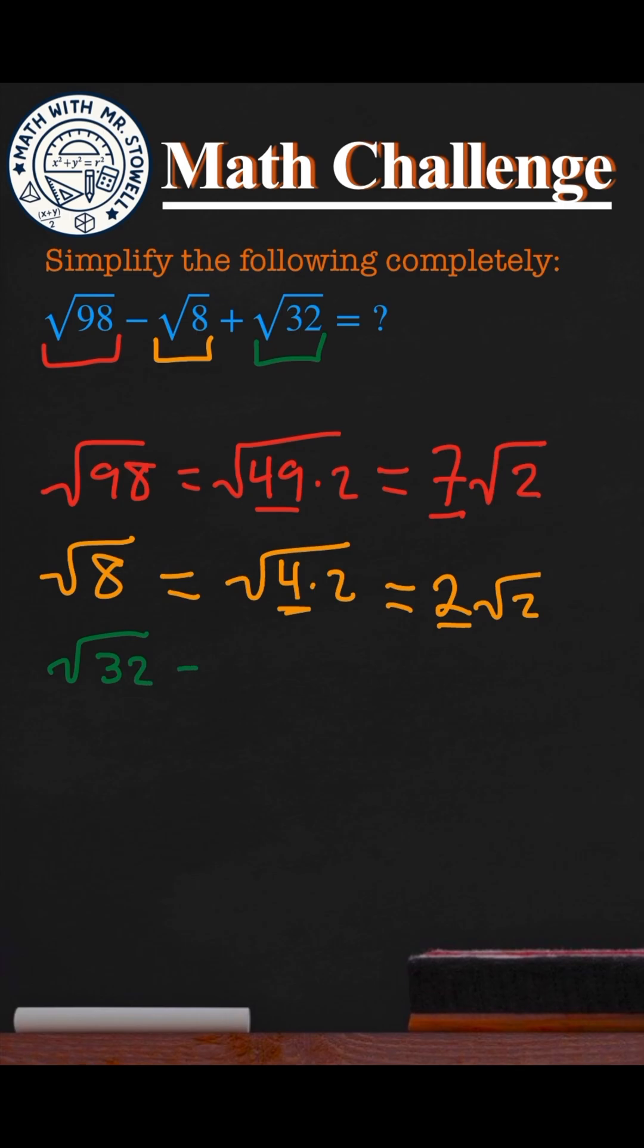The next number is square root of 32. We need to find a perfect square that goes into this, and that perfect square is 16. This is 16 times 2. 16 is perfect. Square root of 16 is 4 because 4 times 4 is 16. And we're left with 2 inside.